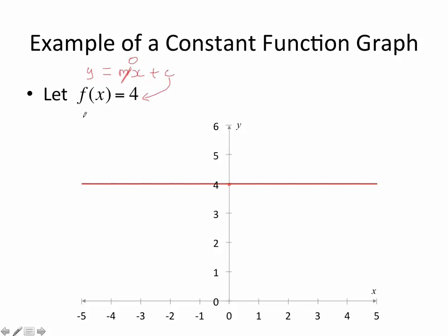Now, what happens when I input values into a constant function? Let's see. F of 10, instead of a constant function, would just be 4. F of 5 is also 4. If you want proof, you see that the value of 5 here, if you draw up, you see it corresponds with 4.